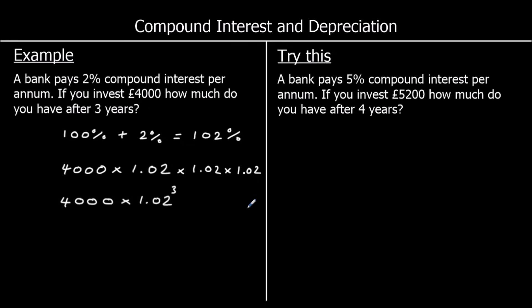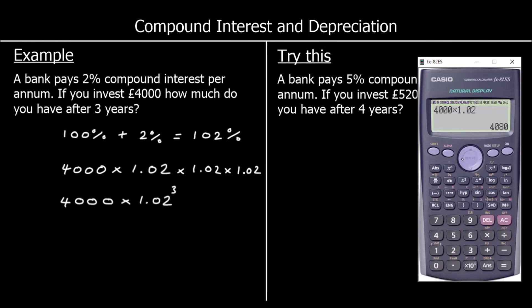So this is my calculation to work out how much I'll have after 3 years. And if I wanted to know how much I had after 5 years, I can just change the power to a 5; 10 years, change the power to 10. So let's go back into the calculator and write 4,000 times 1.02 to the power of 3. Rounding to two decimal places because it's money, that's £4,244.83.